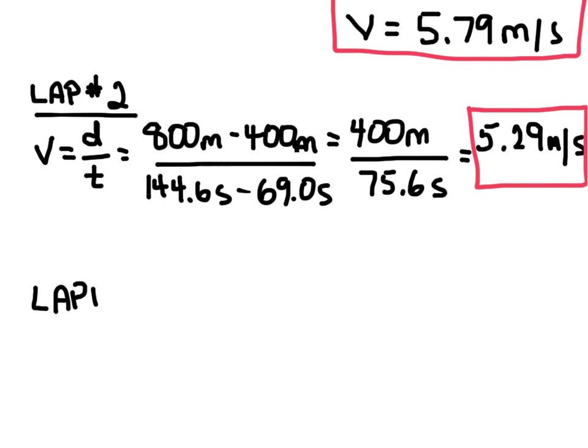Lap number 3, same equation, V equals D over T. And this time, we have 1,200 meters is her final distance here.